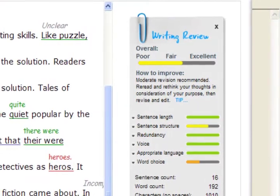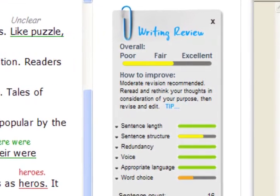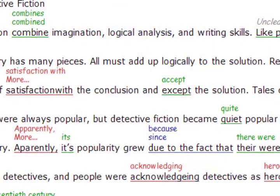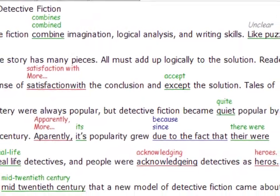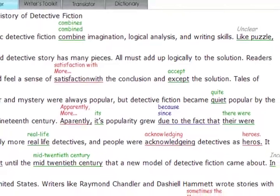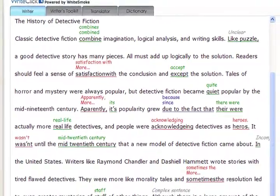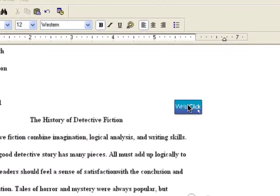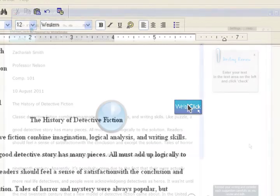It can't catch everything, fix errors for you, or anticipate your intent, but RightClick will call your attention to potential issues and help you look at your writing in a different way. It's easy and smart to incorporate RightClick into your personal writing process. Wherever you're writing, simply click the RightClick floating button or hit F2 on your keyboard to get instant feedback.